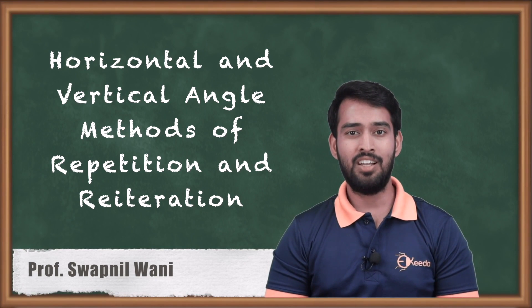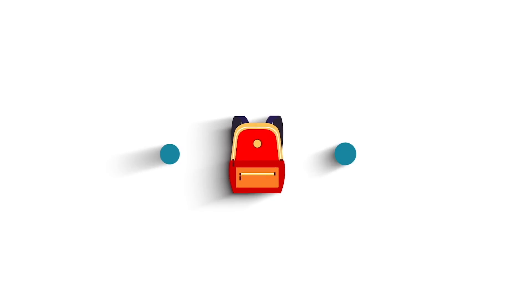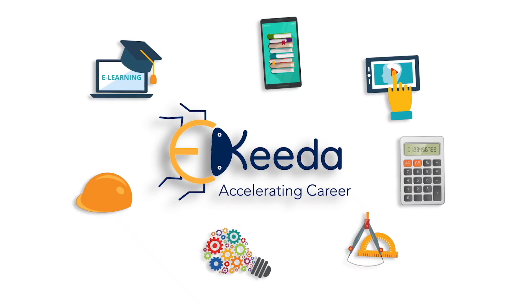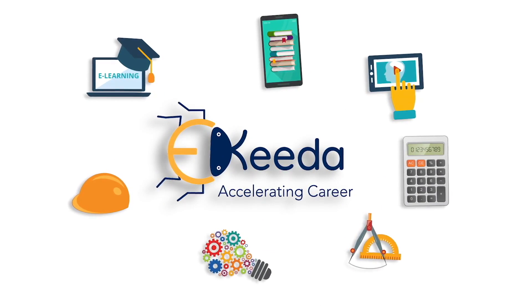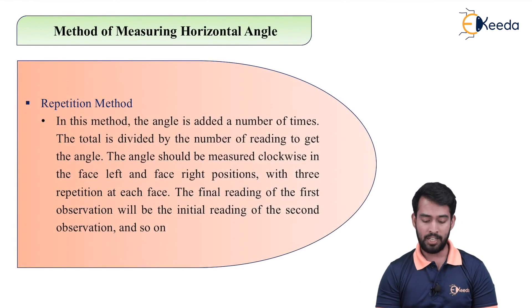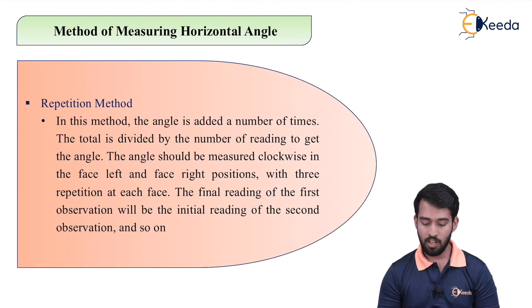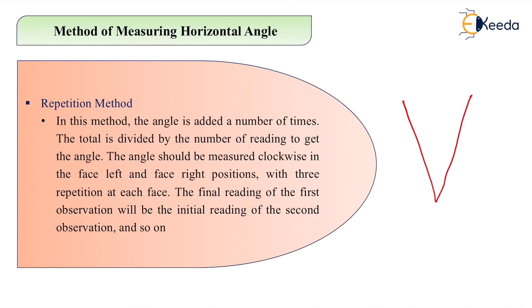Hello friends. Today's topic of discussion is to calculate horizontal angle and vertical angle by using different methods. To calculate the horizontal angle, there are two different methods. Starting with the first method — the method of repetition. As the name indicates, we have to use a repetition method to calculate the same angle, for example angle AOB.